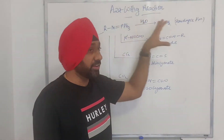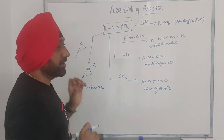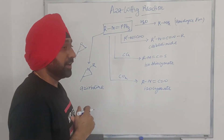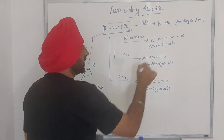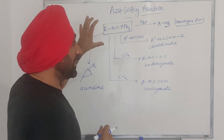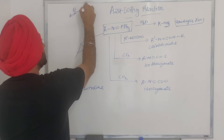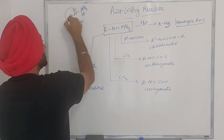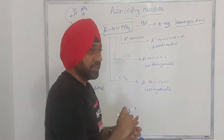Here are the general reactions that these azaylides undergo. If you have an azaylide and you quench it with water, what you generate is an amine. This is a well-known reaction called the Staudinger reaction. Mechanistically, what is happening is simply that the azaylide takes up a proton and undergoes hydrolysis to give you the amine.